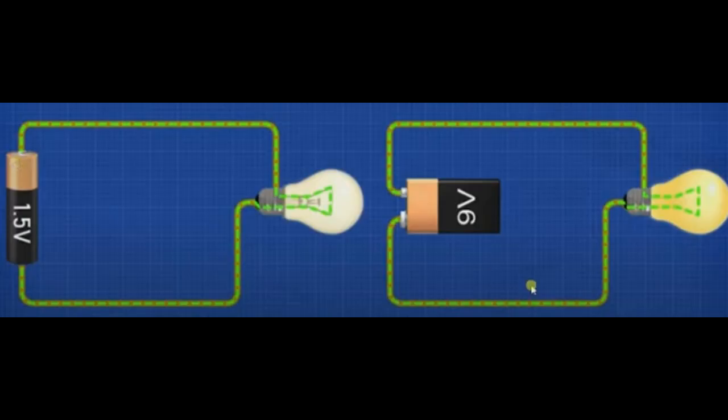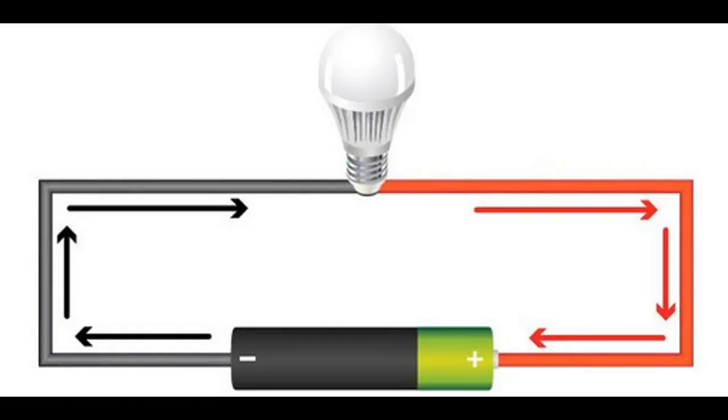As we know, current is the flow of electrons, but these electrons won't move by themselves. Voltage is the pressure from an electrical circuit power source that pushes charged electrons through a conducting loop, enabling them to do work such as illuminating a light.